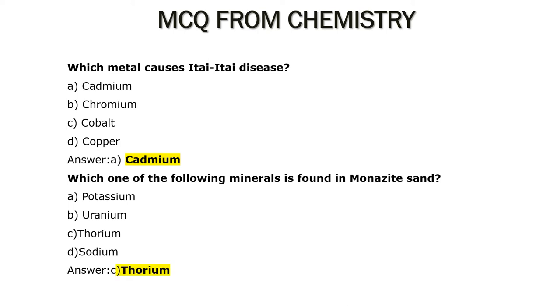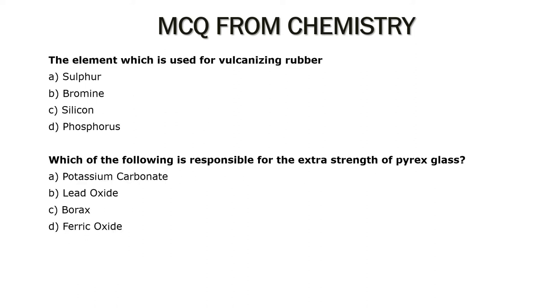Answer Option C: Thorium. The element which is used for vulcanizing rubber is...